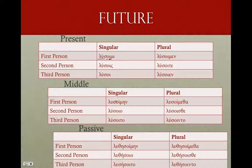And in the middle future: λυσοίμην, λύσοιο — that's our theme vowel, our iota marker, our ending — and the intervocalic sigma drops out — λύσοιτο, λυσοίμεθα, λύσοισθε, λύσοιντο. Very standard system.